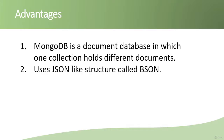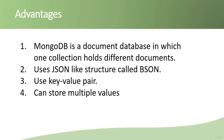MongoDB uses a JSON-like structure called BSON, where B stands for binary — so it is called Binary JSON. It uses key-value pairs, which makes our work easier because data is always stored in key-value format and we can access data using a particular key. It can also store multiple values.